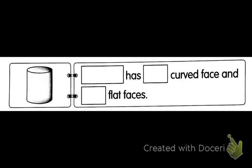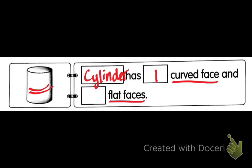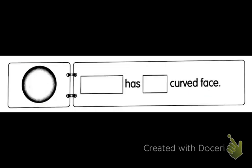How about cylinder? This one is flat face and over here is flat face. So, two flat faces. This is sphere. S-P-H-E-R-E. Sphere has how many curve faces? Only one curve face.